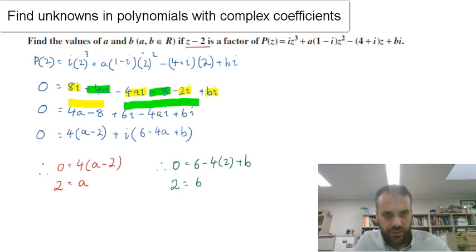All right, so just stepping back a little bit, we had a polynomial with coefficients that were complex. Now, we knew that z-2 was a factor, so we could put 2 in, and we would know that the whole thing would be equal to 0. Now, the equation itself is made up of real and complex terms.